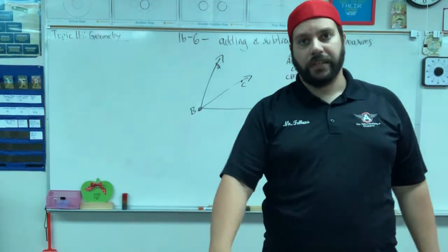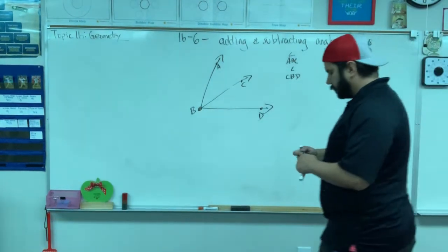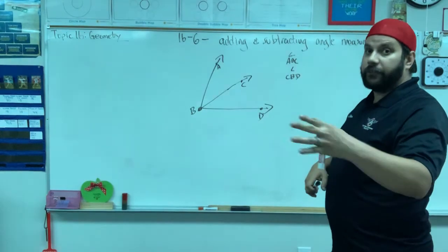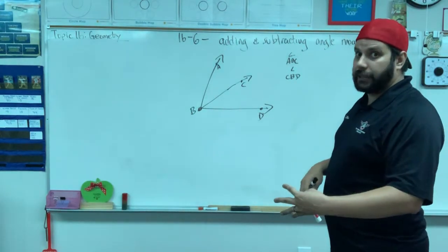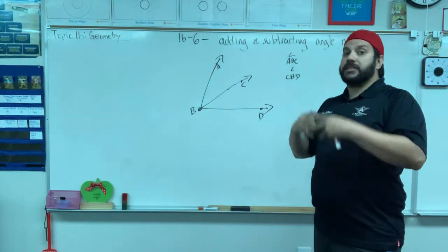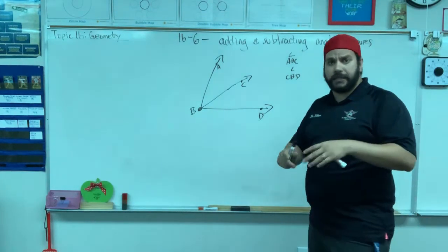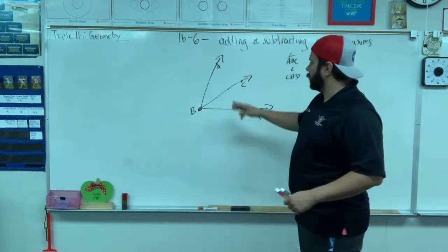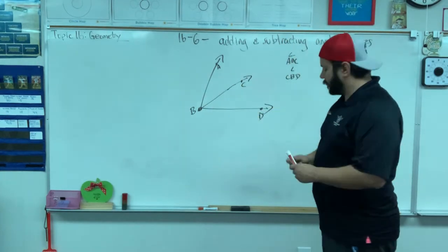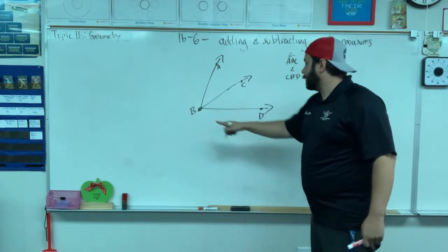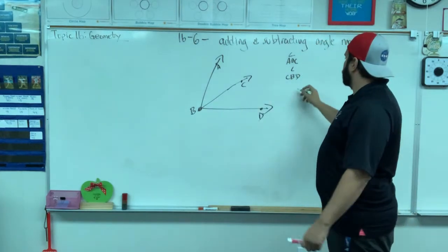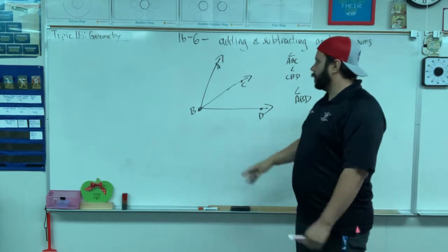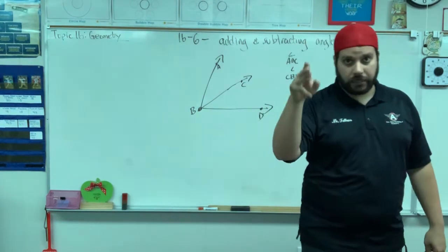Now, this is actually easy if you keep it straight, if you keep it sequential and do it logically. This is actually super easy. Look, I've created a third angle as well, and that angle is ABD. All those angles share the vertex B.